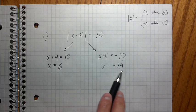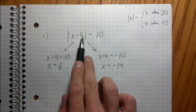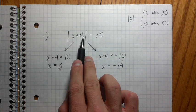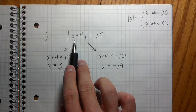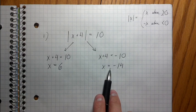So let's check these values to make sure it makes sense, right? If I put six in for x, if I go six plus four, that's 10. Absolute value of 10 equals 10. Perfect, that works.